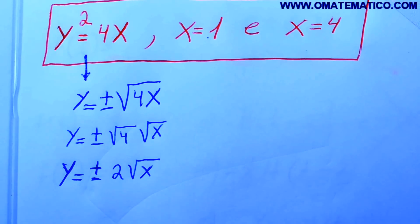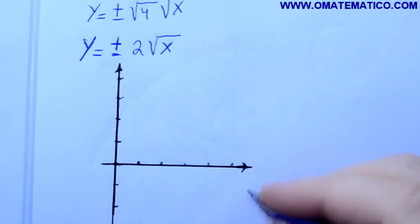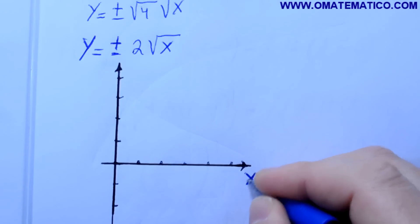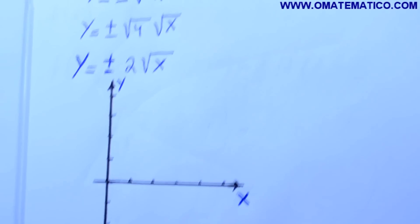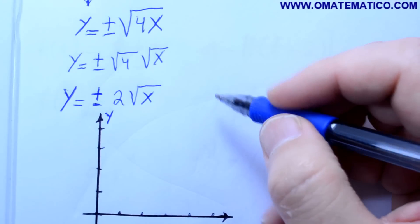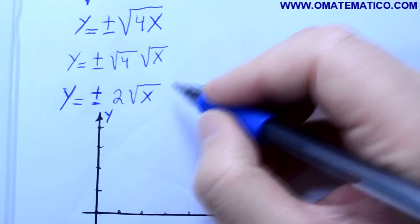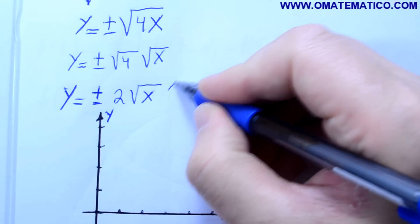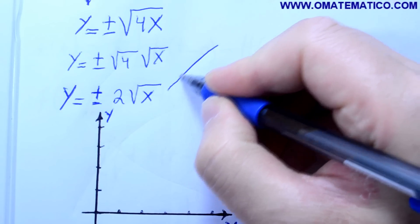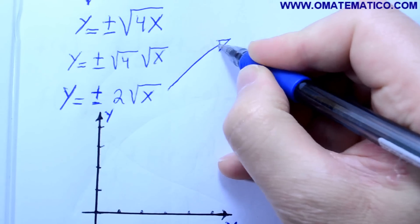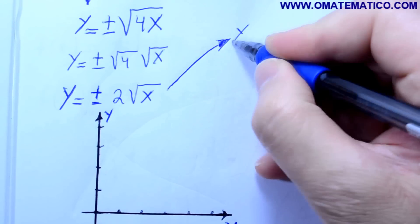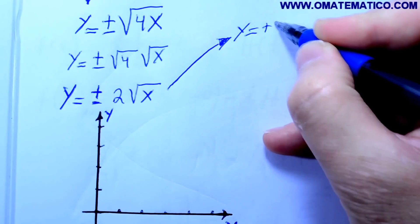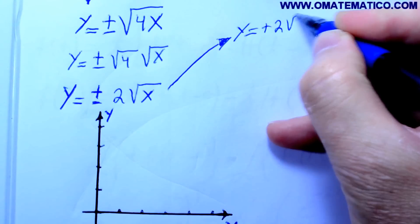Colocando no nosso gráfico cartesiano, aqui está o eixo do x e do y. Eu vou separar, porque tem muita gente que tem me pedido para fazer o desenho, porque não tem conhecimento de como faz o desenho. Às vezes o professor não dá o desenho pronto. Então, vamos separar aqui y igual a mais 2 raiz de x, que é uma função.